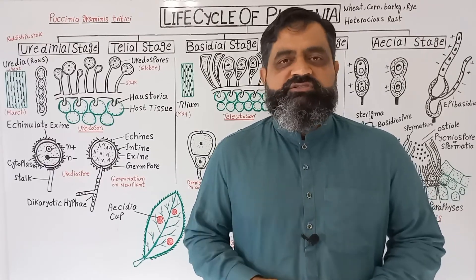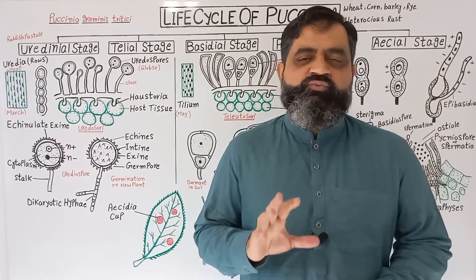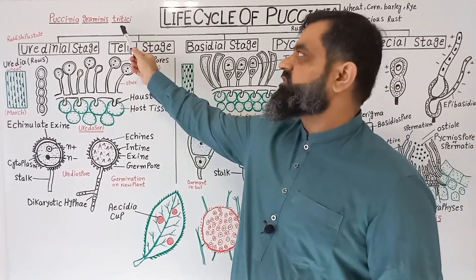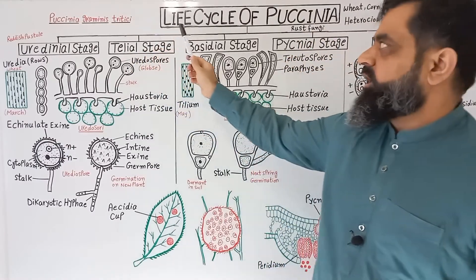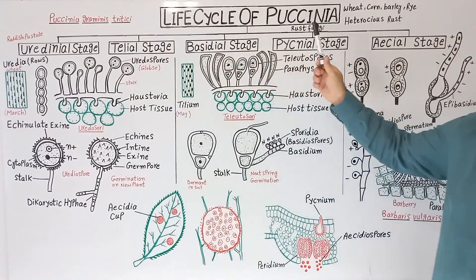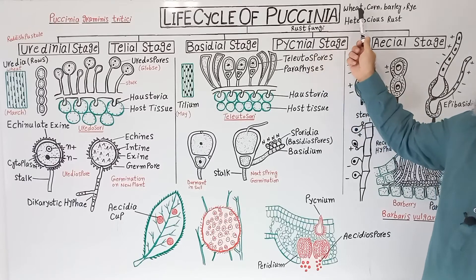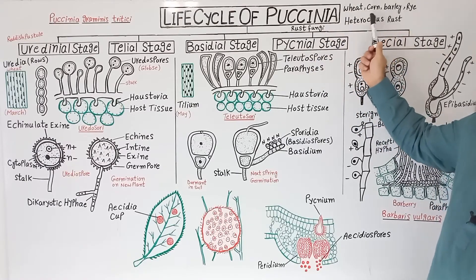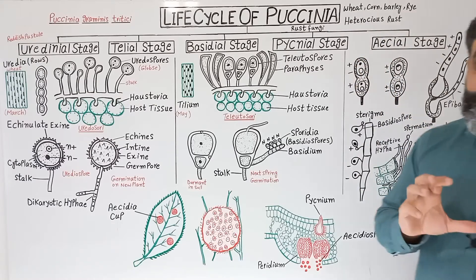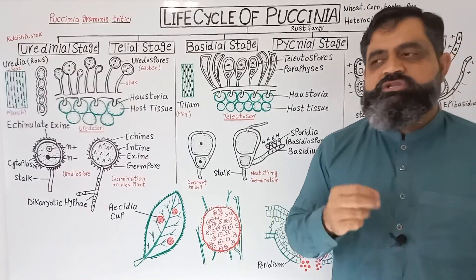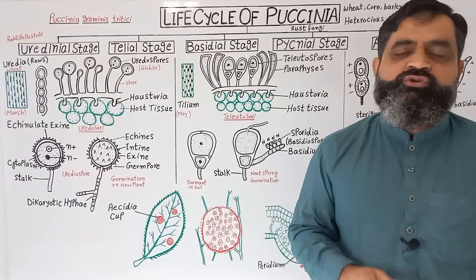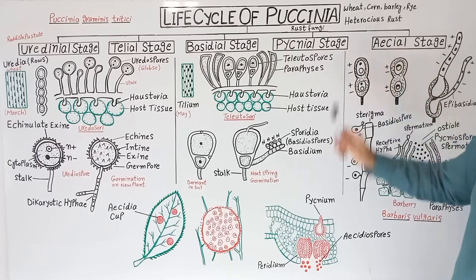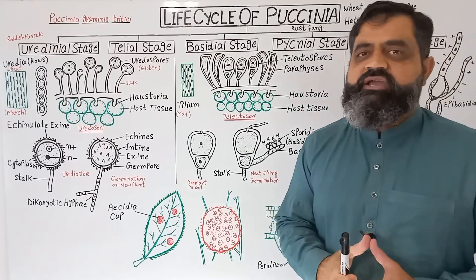We will discuss different stages. First of all, the scientific name of Puccinia is Puccinia graminis tritici. The usual hosts of this Puccinia fungus are wheat, corn, barley, rye, and barberry. These are the plants mostly affected. Usually this fungus has two hosts simultaneously, that is why it is known as heteroecious rust. We are going to discuss its life cycle in detail.